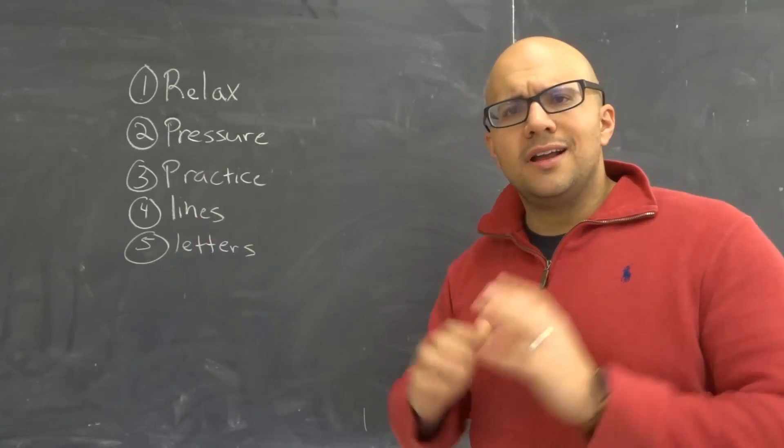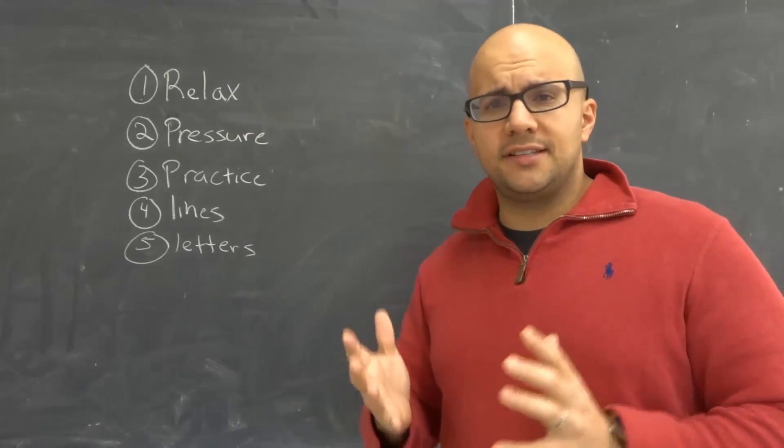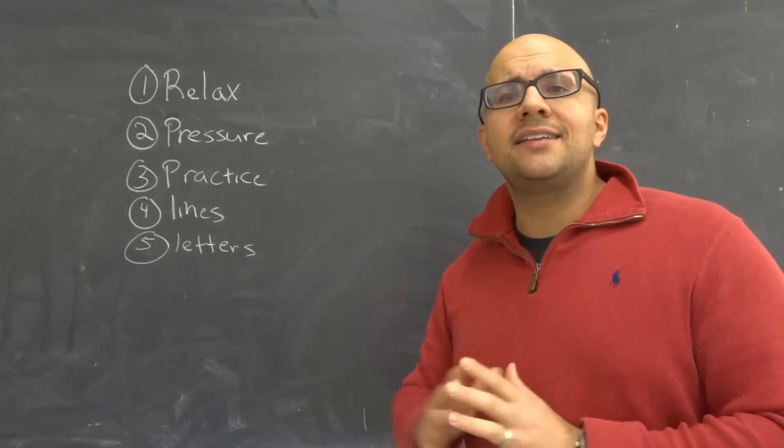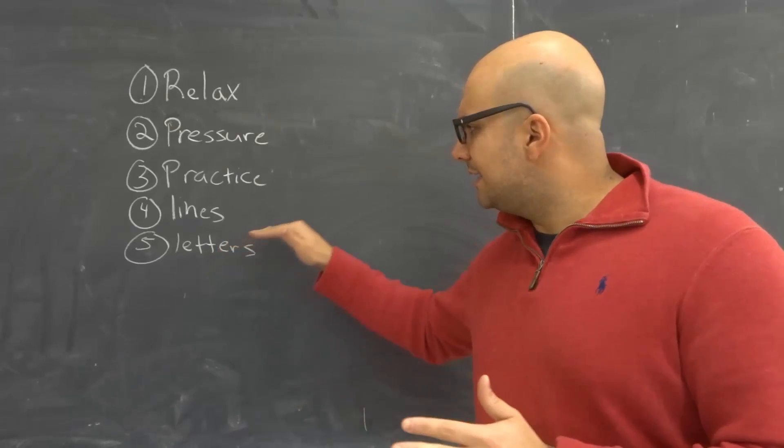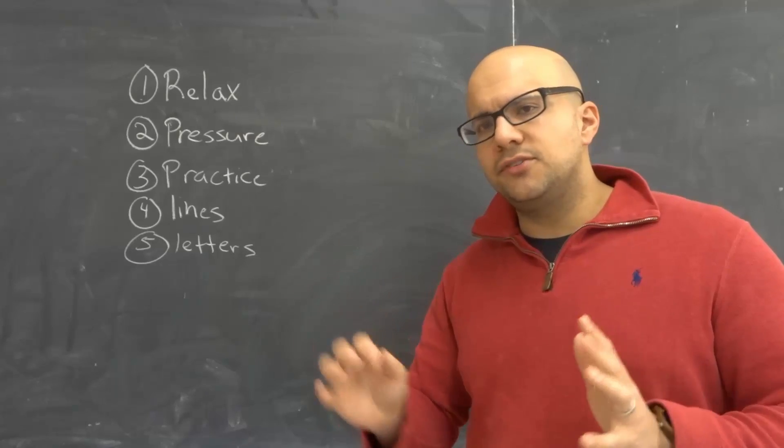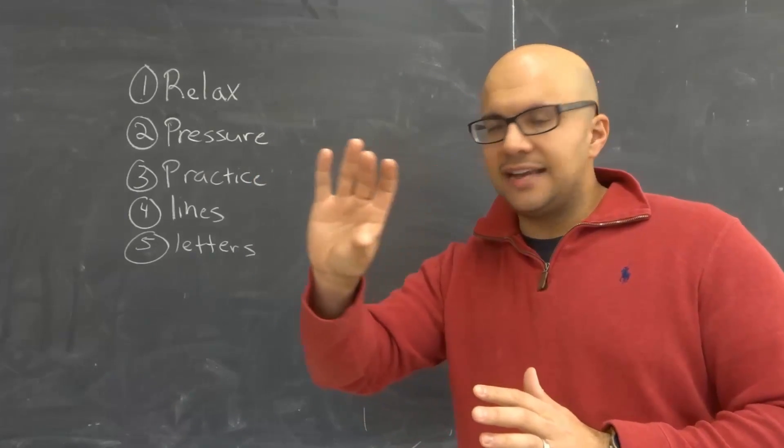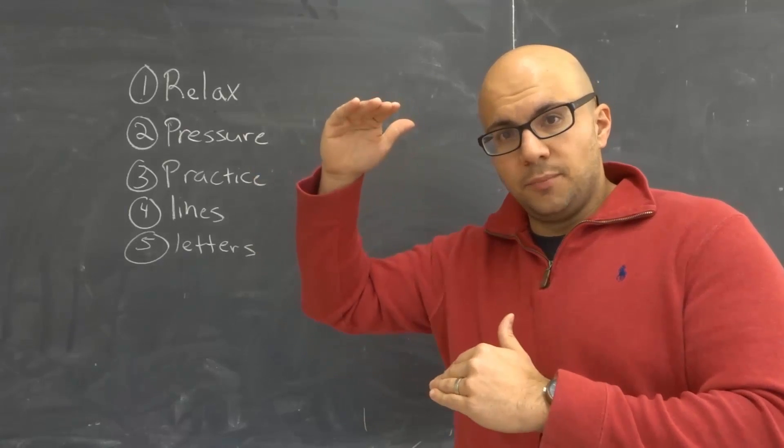Tip number four is lines. If you're writing on a paper with lines, which I'm assuming that most of the time you are, use the lines as a guide. If a line is on the paper, then you can use it to guide your writing. I promise you that if you use that line as a guide, you're going to be better at forming those letters in a nice straight line and with the appropriate sizes.